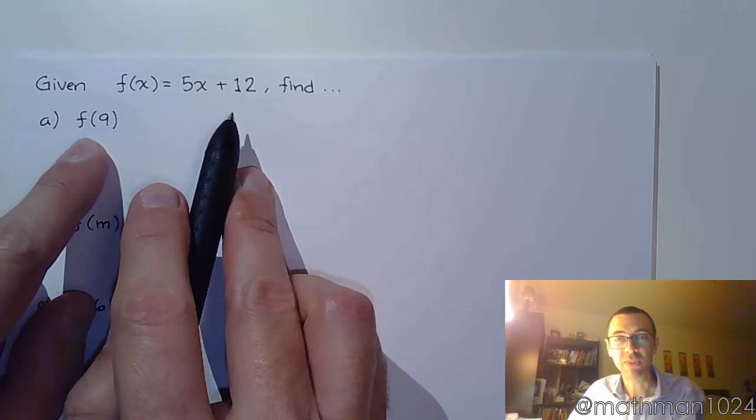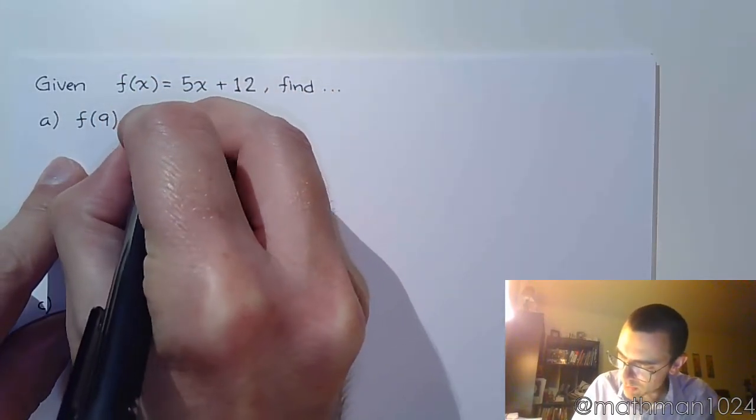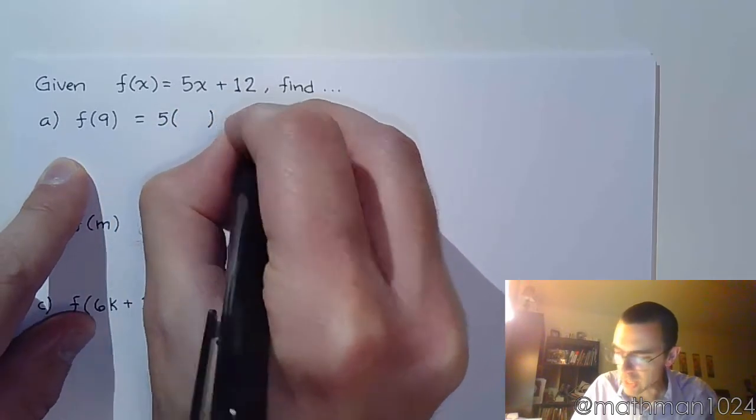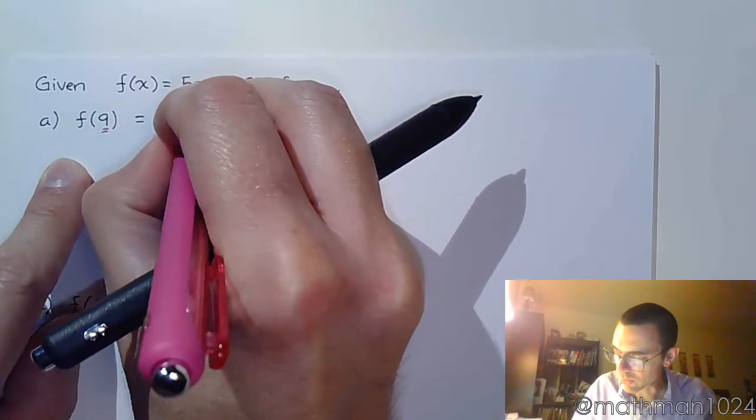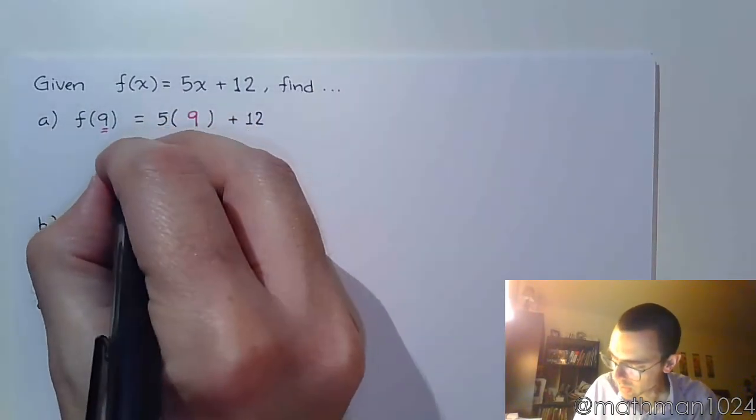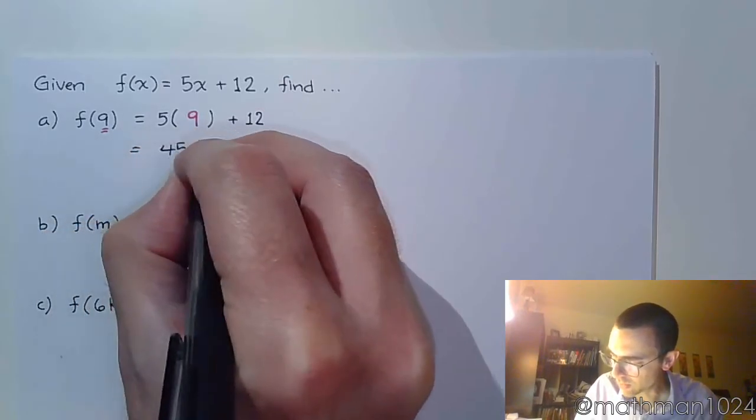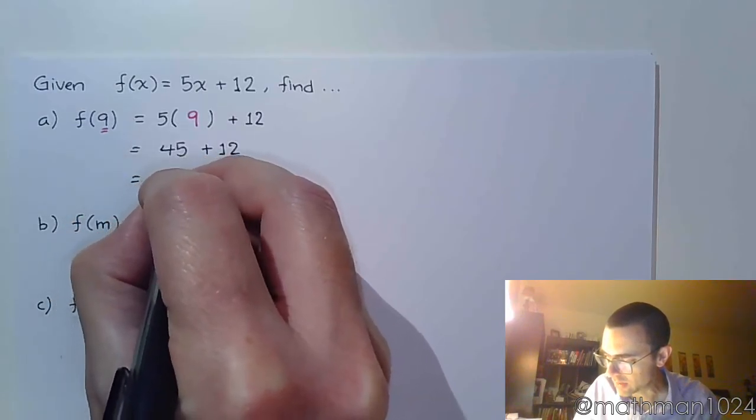This first part says find f of 9. Well, that should be nice and easy. As we mentioned in the last video, we replace the x with parentheses, and in the parentheses is where the input value goes. So 9 goes right there. Alright, so this gives me 45 plus 12, and we get 57.